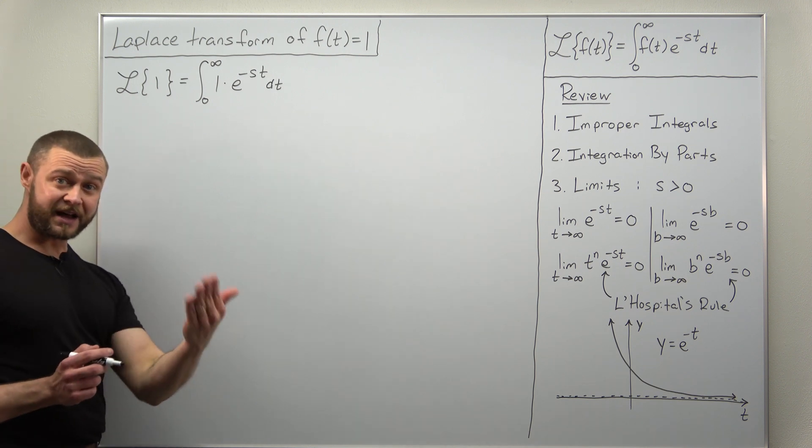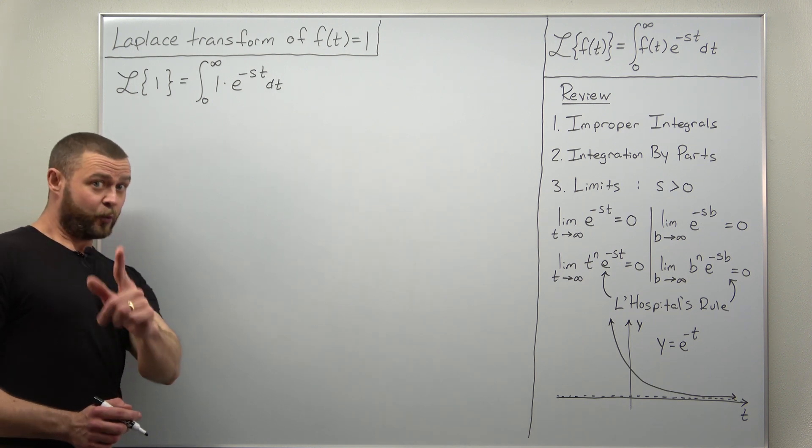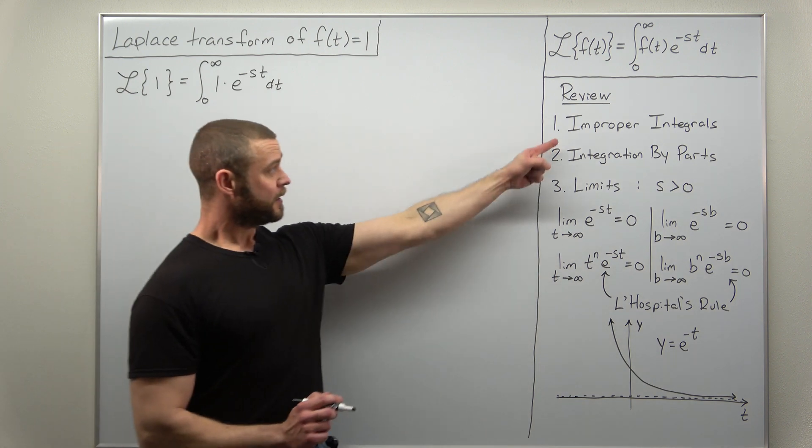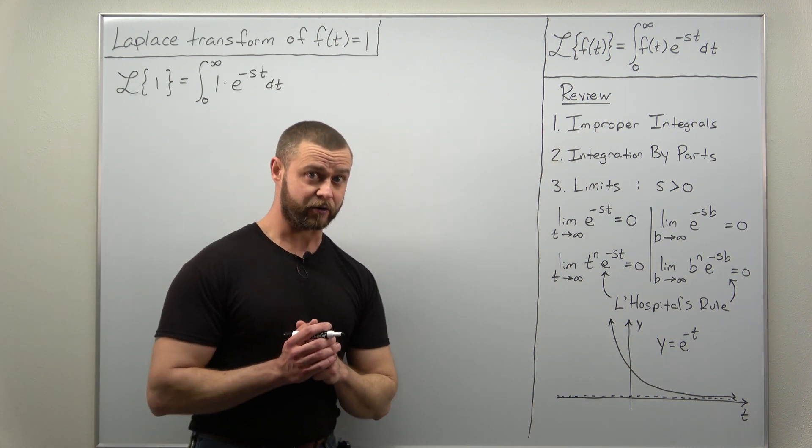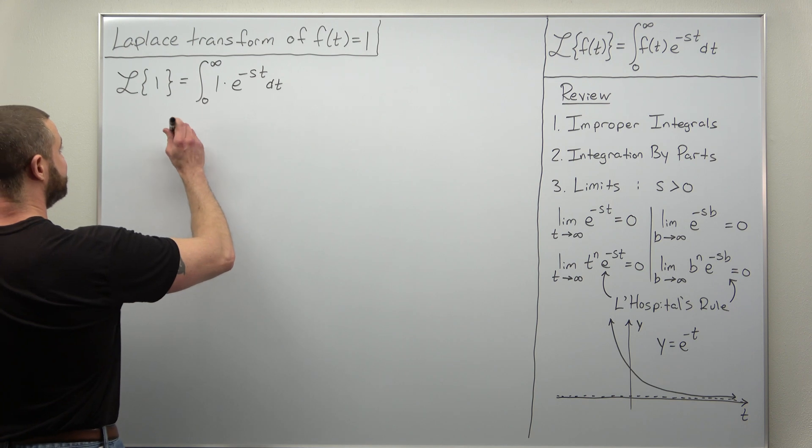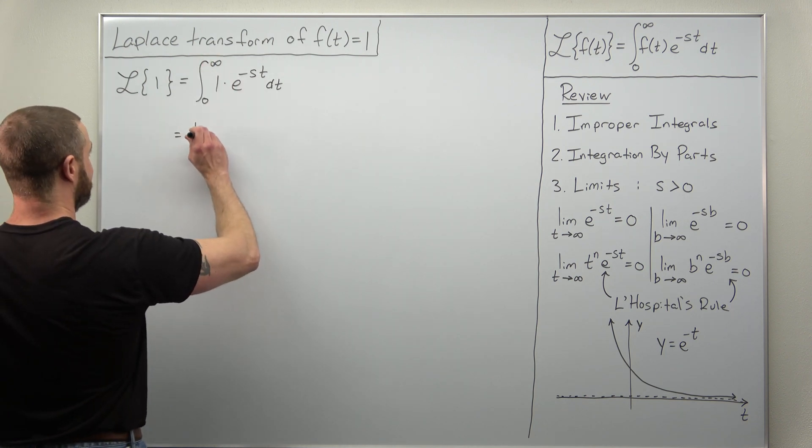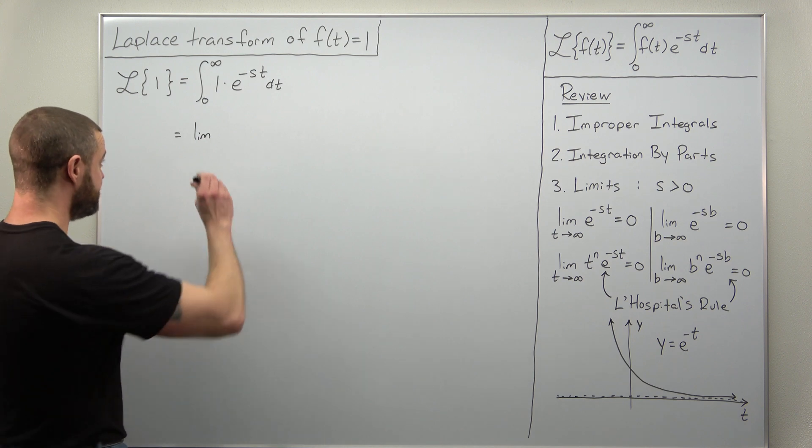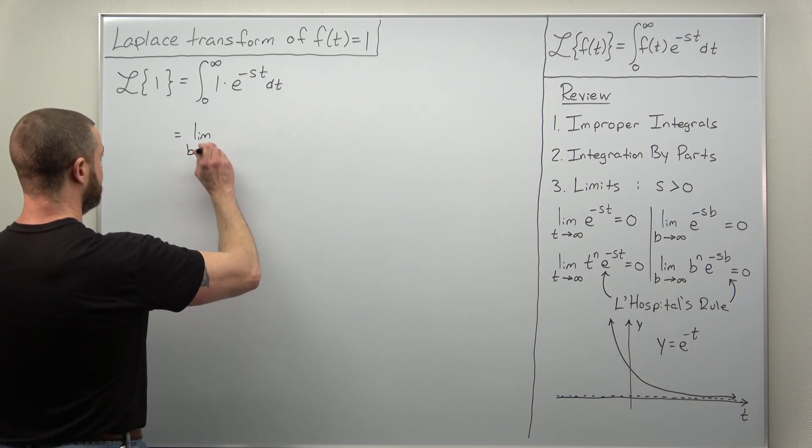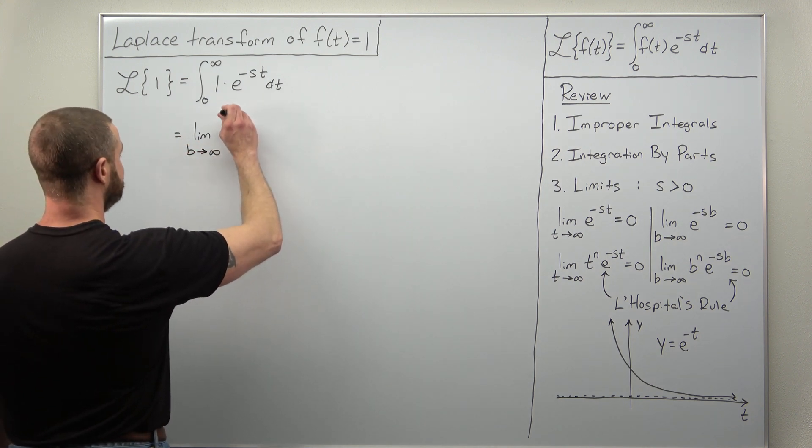Now this integral is actually not that complicated, but we do need to set it up correctly as an improper integral. So we're going to set this up, replace the infinity with some other variable, which we'll go with b, and then we take a limit as b goes to infinity.